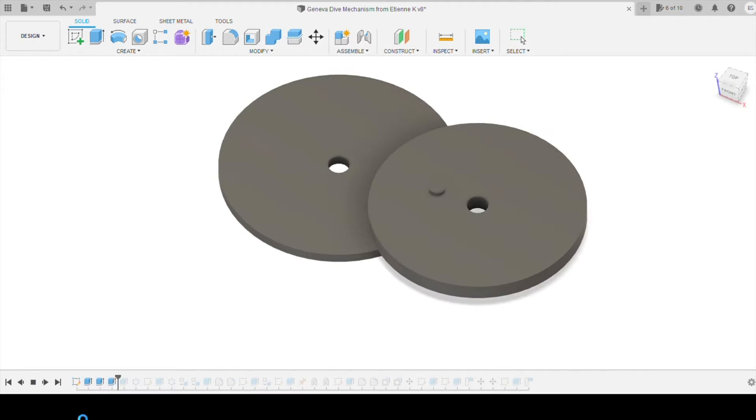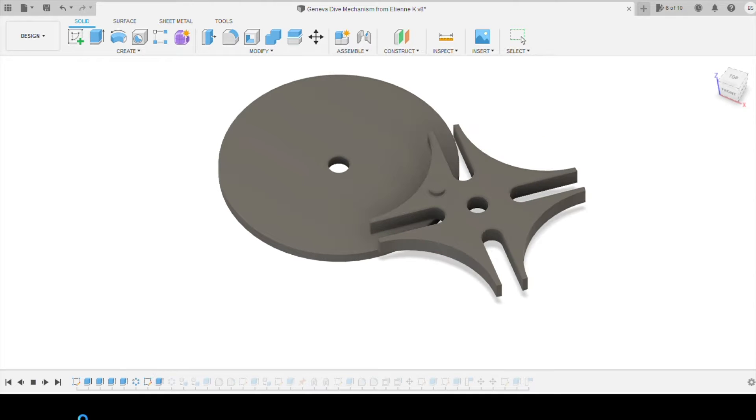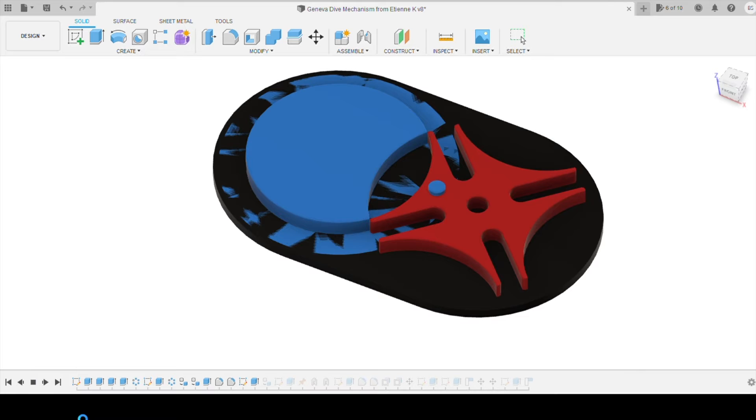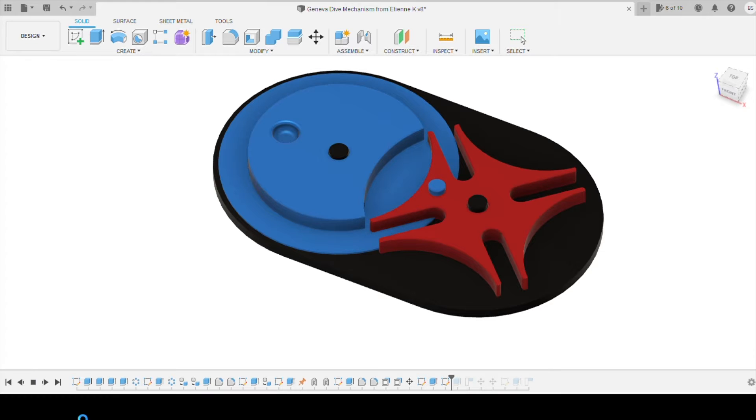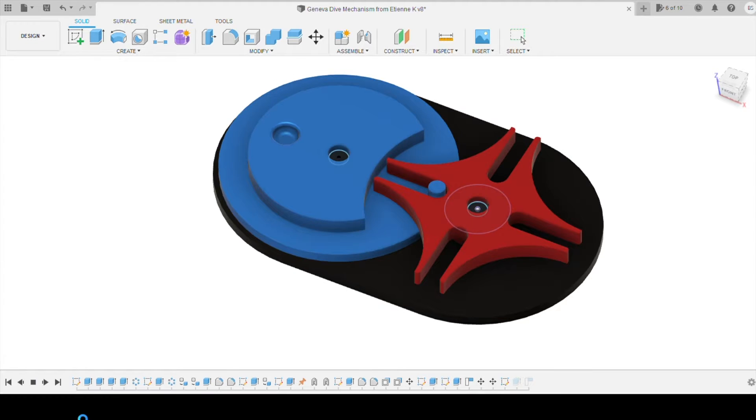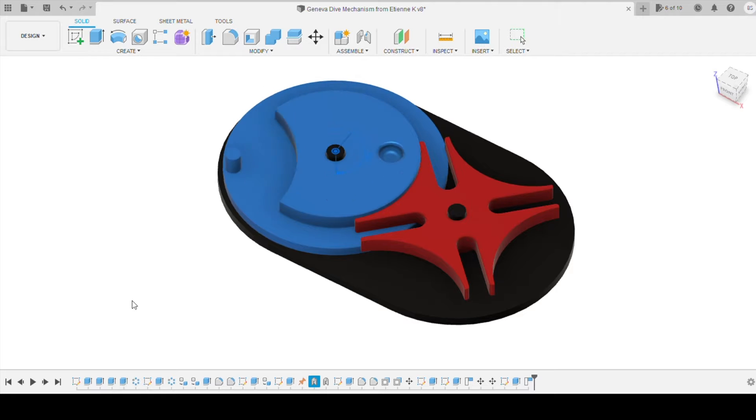This is the process that I used to design the Geneva drive in Fusion 360. I followed a YouTube video from Etienne Kaye who shows the process for designing this four slot Geneva drive. I sized it down 50% to just make a smaller version of it. This is probably not a beginner level design, as you'll want to try some simpler designs first.